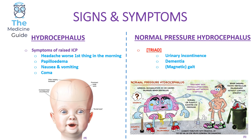Remember that normal pressure hydrocephalus presents classically in elderly patients with reversible signs of dementia — the confusion will be reversed once the normal pressure hydrocephalus has been resolved. So remember: wet, wacky and wobbly, classically found in elderly patients.